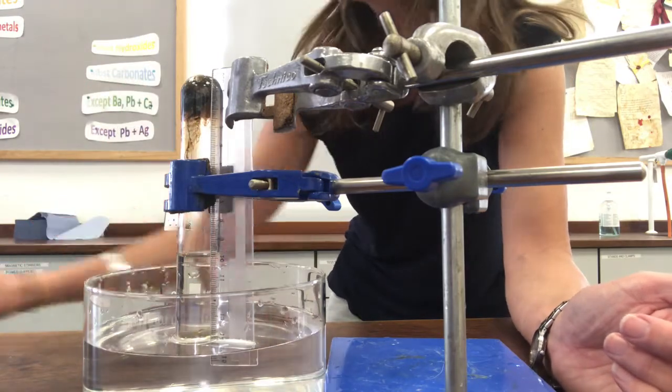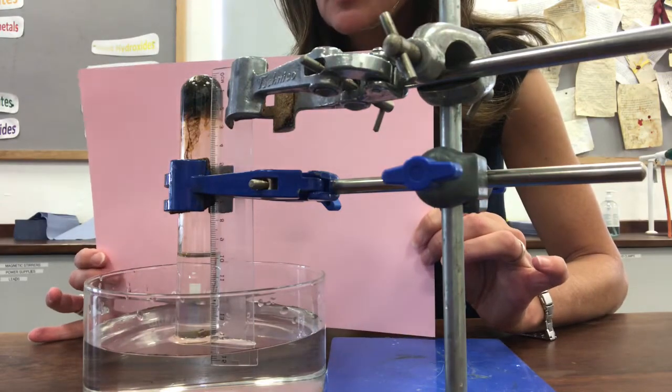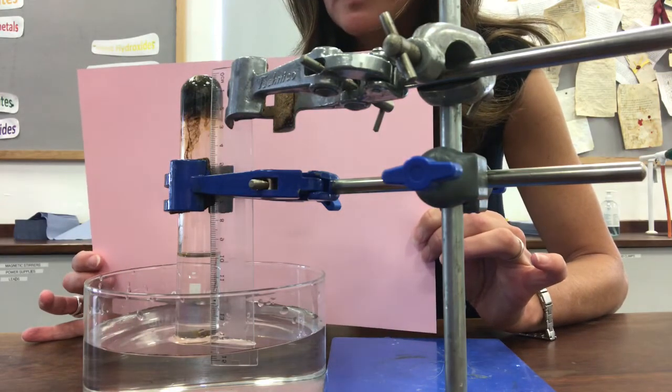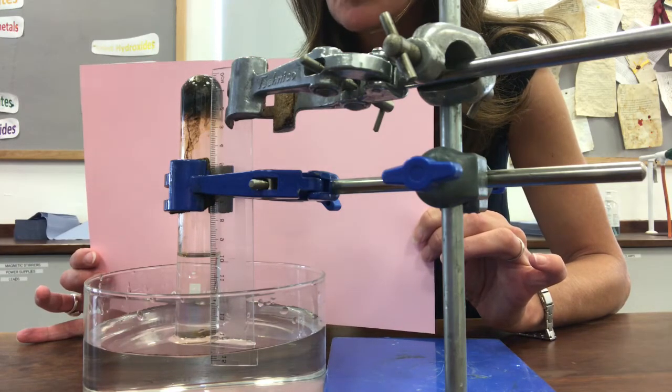I want to hold this pink card behind so that you can read off the length of the air bubble now. It was 12.5 when we set it up, and I hope you'll agree that it looks like it's about 10 centimeters now.